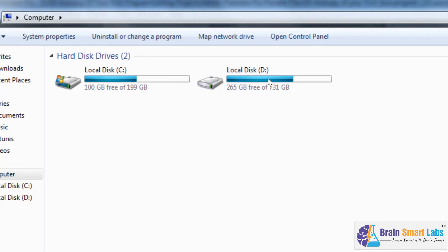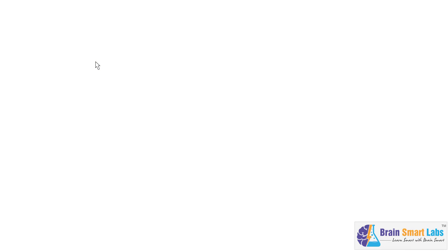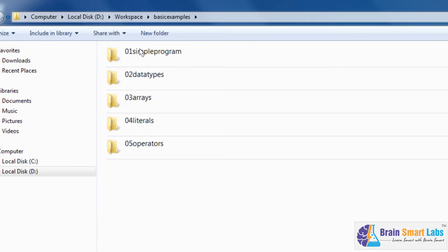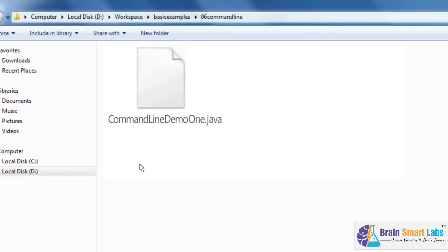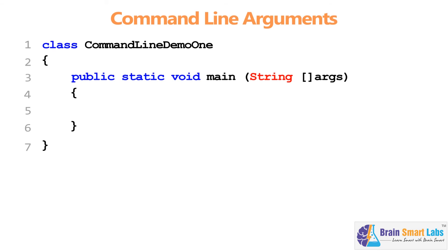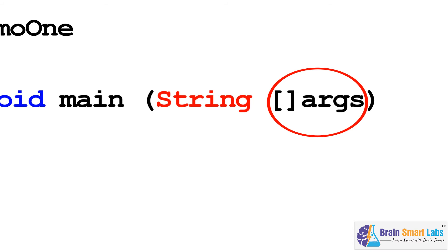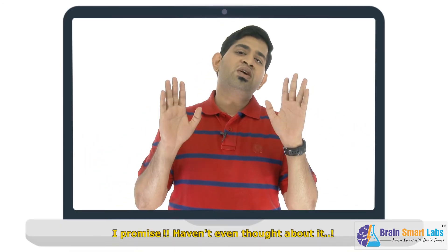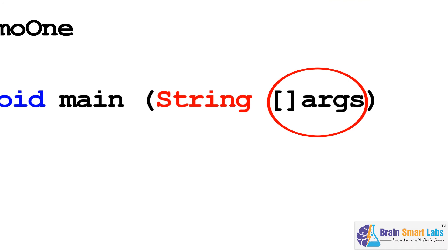In my computer, go to D drive, workspace, and then go to the basic examples folder. Create a new folder named '06 command line', and inside it create a new program named CommandLineDemo1.java. Right click the file and edit it using EditPlus. Now type the program with line-to-line and letter-to-letter accuracy. Notice in line number 3, we have written our main method, and there we have declared a string array bearing the name args.